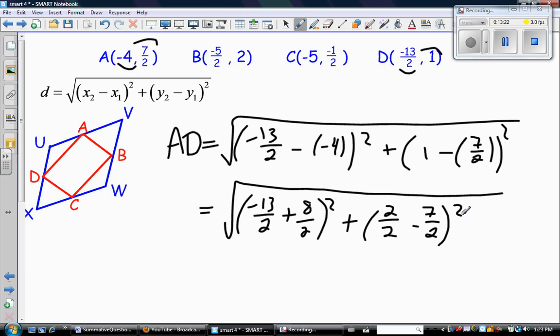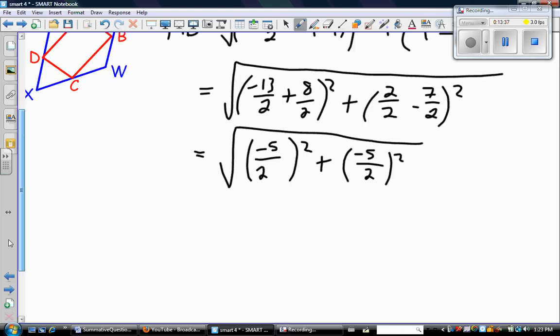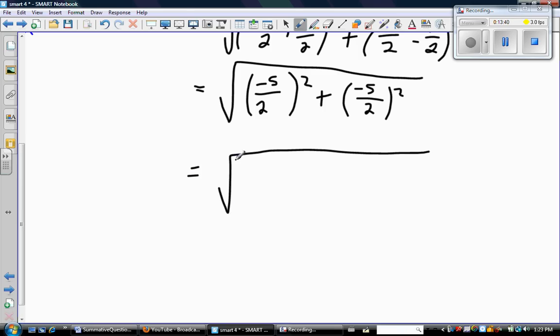So do that math. Denominators 2. Negative 13 plus 8 is negative 5. 2 take away 7 is negative 5. And the denominators don't change when you do that. Now I can finally square those brackets. 5 times 5 is the same as negative 5 times negative 5 is 25. 2 squared is 4. And again, negative 5 times negative 5, 2 times 2 is 4. You know what I mean. So denominators 4. 25 plus 25 is 50.